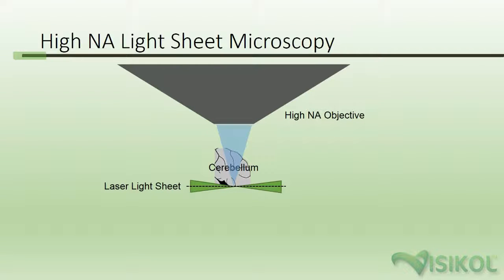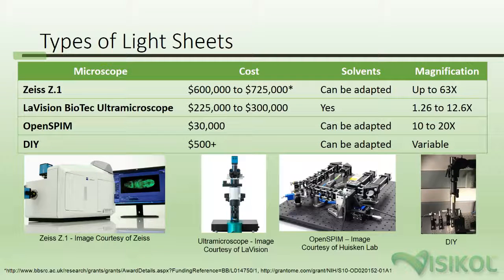The resolution of light sheet imaging can be improved by using higher numerical aperture objectives. However, improving the resolution of imaging by a factor of 2 will result in 8 times slower scans and 8 times more information being acquired from tissues. For very small regions of interest and higher resolutions, we would suggest using confocal microscopy instead.